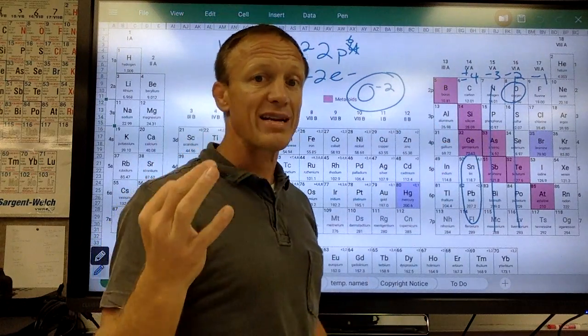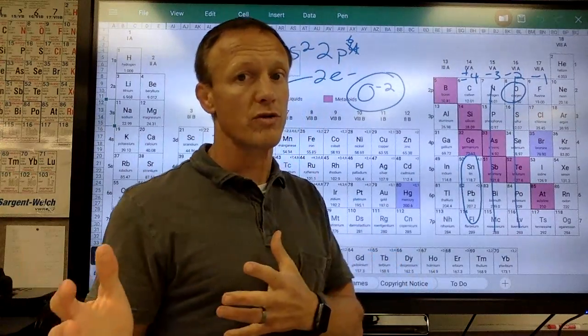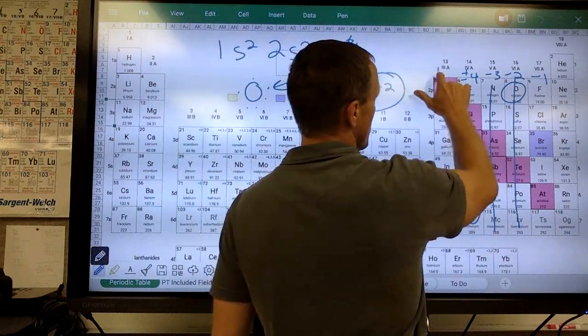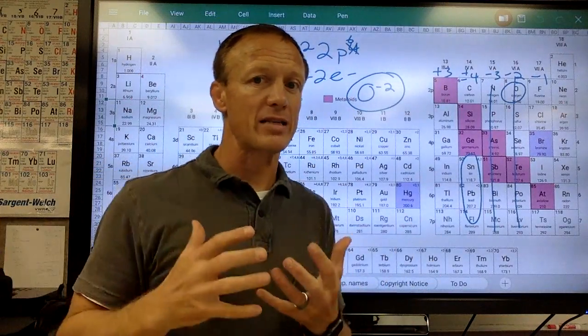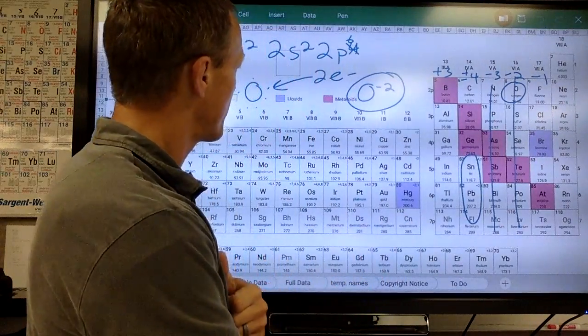The boron family with three valence, they would have to gain five or lose three. They tend to lose three electrons and form a positive three charge. So it's a little weird. Gaining makes them negative, but you're gaining negative, gaining electrons, which makes them negative.